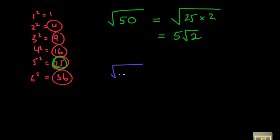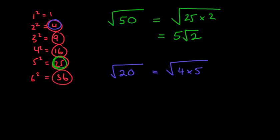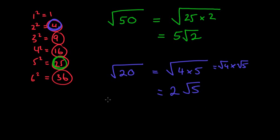Another popular one is the square root of 20. Ten times 2 won't work, 20 and 1 won't work, but 4 times 5 works because 4 is a perfect square. The square root of 4 is 2, so we get 2 root 5. If you want to write the extra step as square root of 4 times square root of 5, you're welcome to do that — and we get 2 root 5.